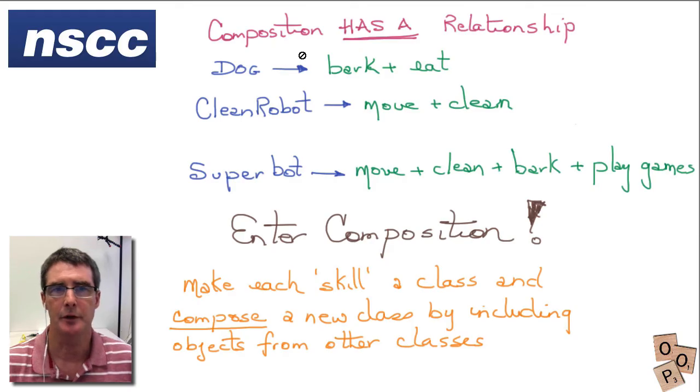Sometimes composition is referred to as a has-a relationship. So we have inheritance is-a like a dog is an animal. Composition has a characteristic such as it can eat or it can bark. How do we apply that?